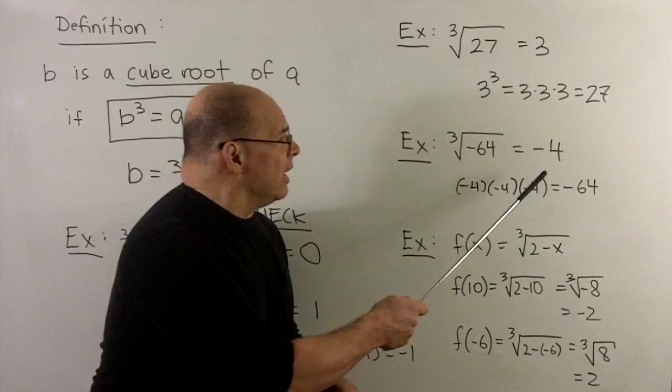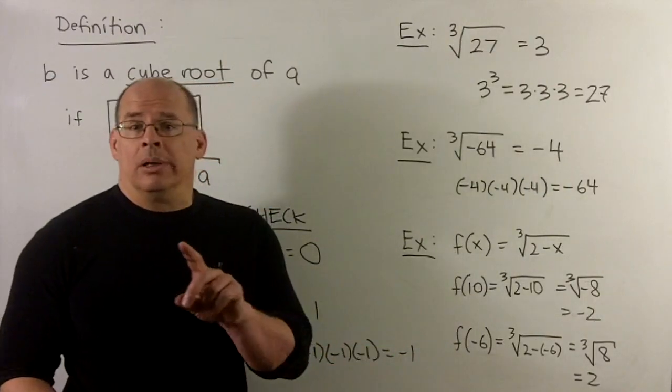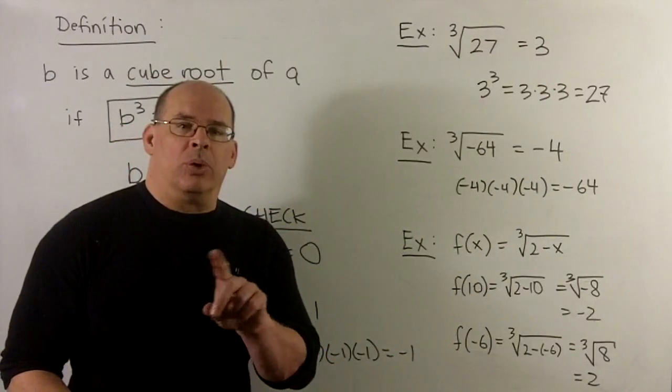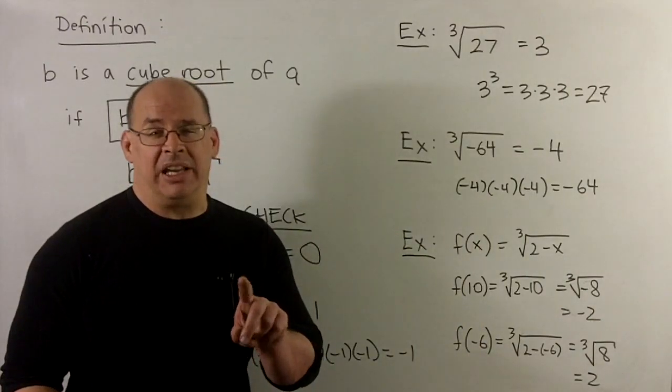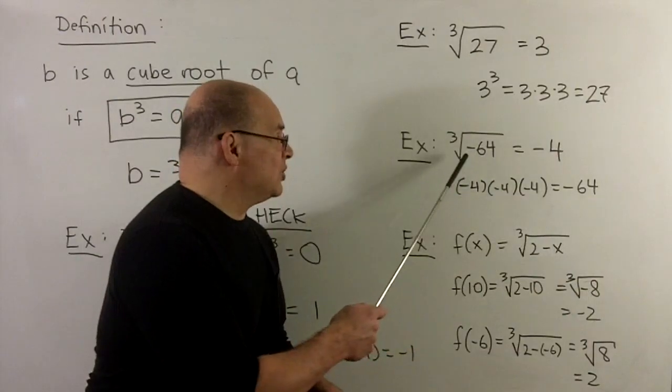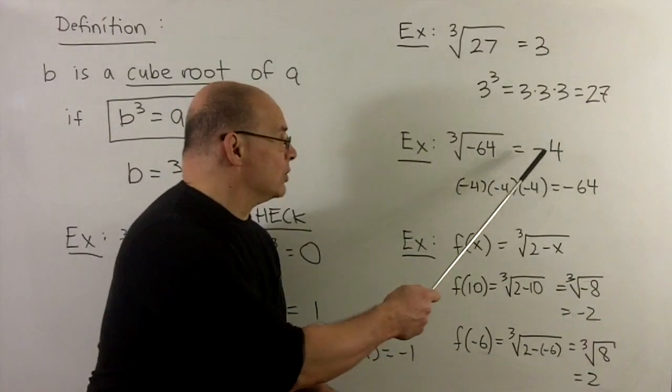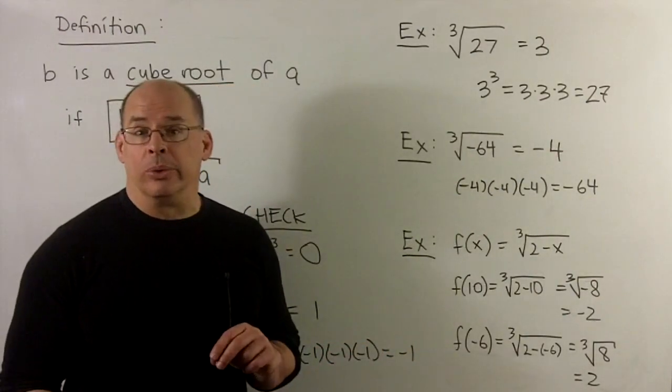And then if I take the cube root of 64, minus 64, we're going to get minus 4. So if you know what the cube root of 64 is, 4 times 4 is 16, times 4 gets you to 64. This is just using the rule minus goes to minus under cube roots.